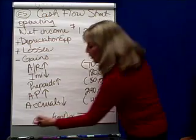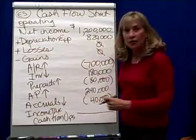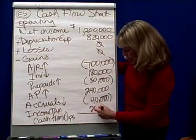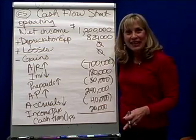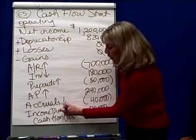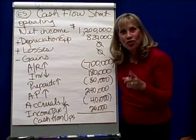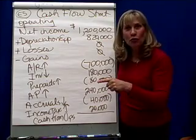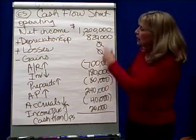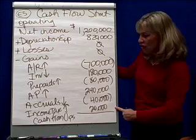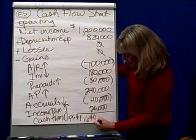The final current liability is income taxes. Income taxes started at $120,000 and ended at $140,000 — an increase of $20,000. If income tax liability goes up, you still owe those bills and still have your money, so you add the $20,000. Taking all these changes together, the cash from operations is $1,640,000.